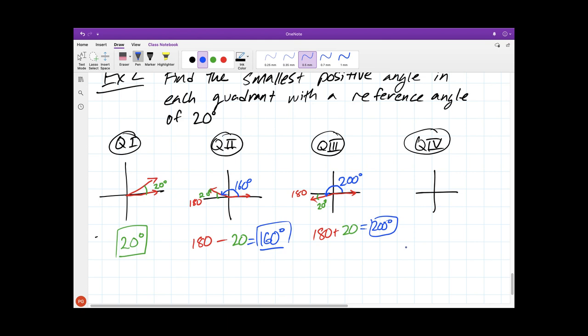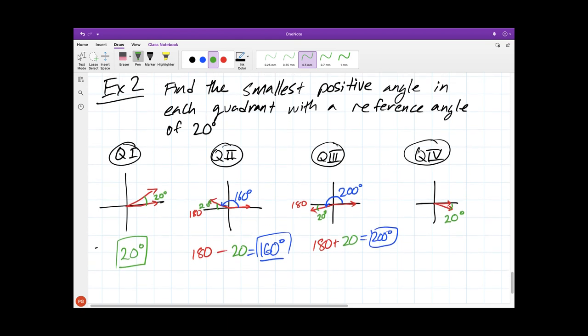And finally, in quadrant four, this angle right here needs to be 20 degrees. An answer to this question you might think would be negative 20. This is the rotation going in the opposite direction. But we want the smallest positive angle. So negative 20 won't work. We want the angle that starts here, goes all the way around to this side. It's not quite 360 degrees. It's 20 degrees short. So our answer would be 340 degrees.